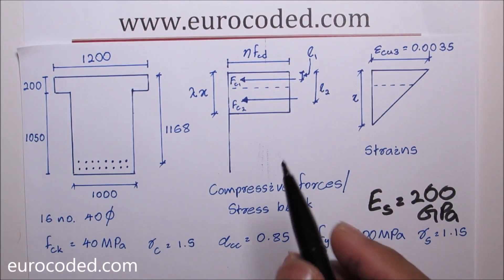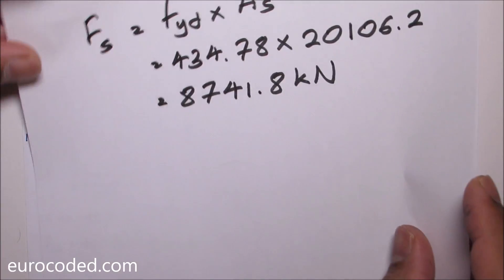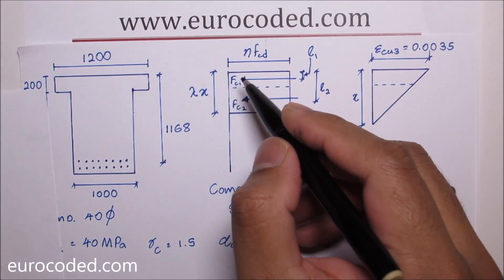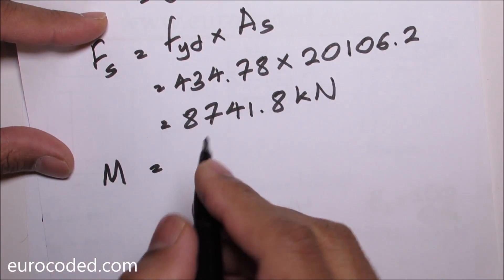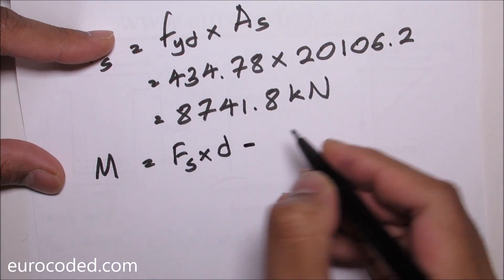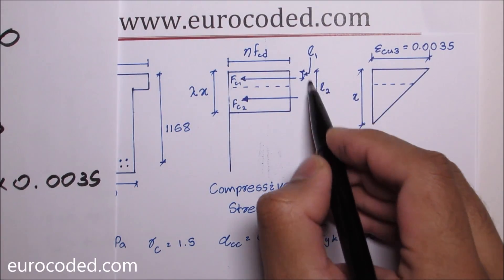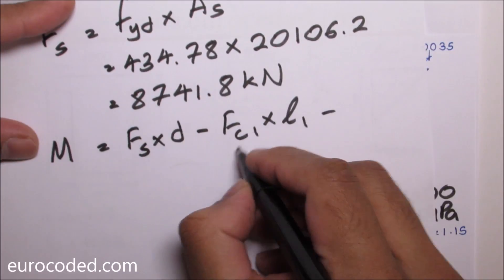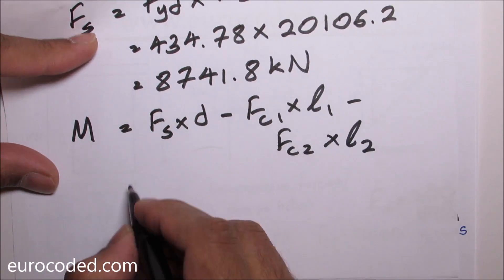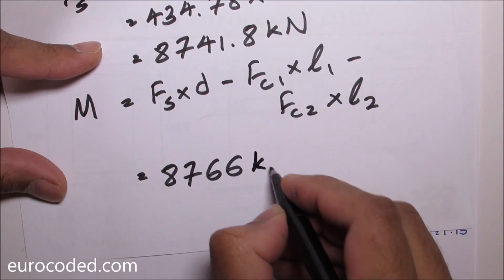Hence what we can do is we can take moments about any point using these forces and calculate bending moment capacity. In this example I'm going to take bending moments about this point here. So we can write our bending capacity is equal to FS times D which is the effective depth, minus FC1 times L1 which is this force FC1 and lever arm is L1. Same goes for FC2 and lever arm for FC2 is L2. And if you calculate the value then you would get 8766 kNm.